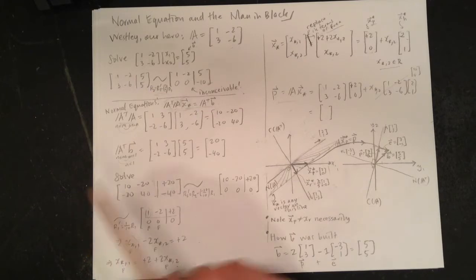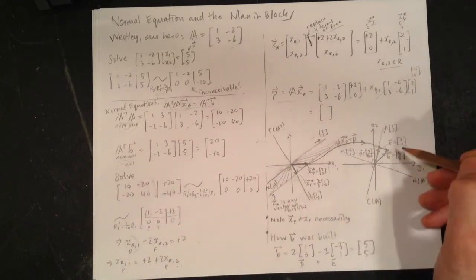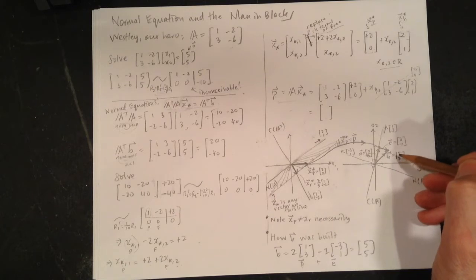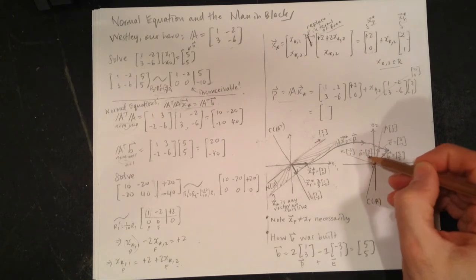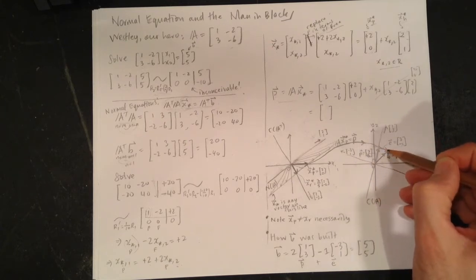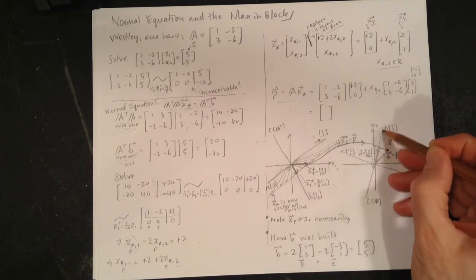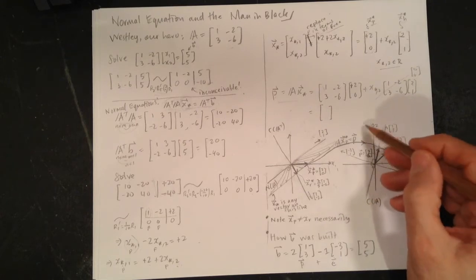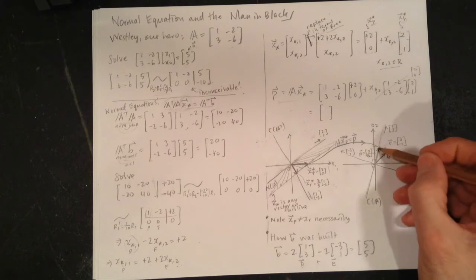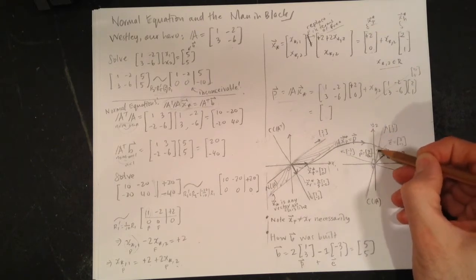So here's the big picture—here's b, it's [5, 5]. We're trying to get to this, we can't. We will find out that we can get to [2, 6] and that's as close as we can get to b as possible. This is column space. Wesley can only produce vectors along [1, 3]—they have to be a multiple of [1, 3], can't produce anything out here. That point is the closest to b. At this point we have p + e = b.